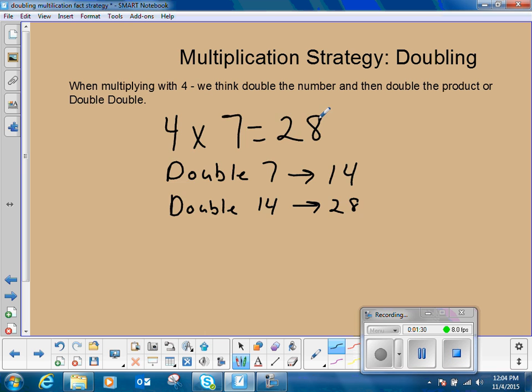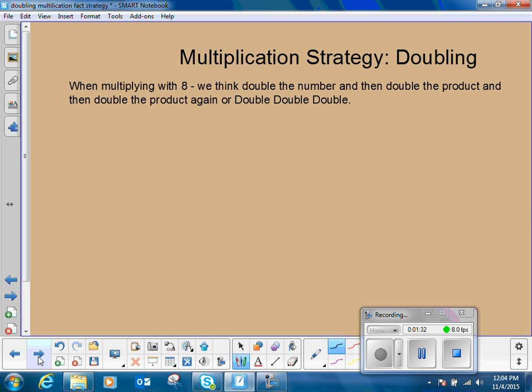The doubling strategy can also help us with eights. When we multiply with eight, we think double the number, then double that product, and then double the product again, or double-double-double. So let's look at eight times seven.